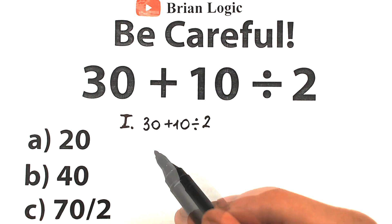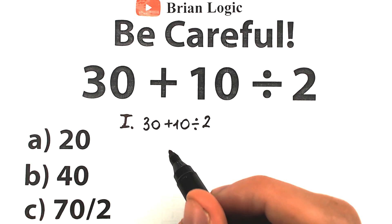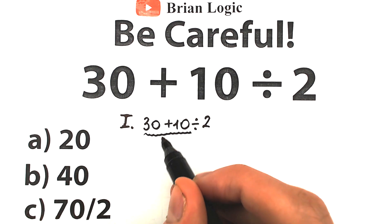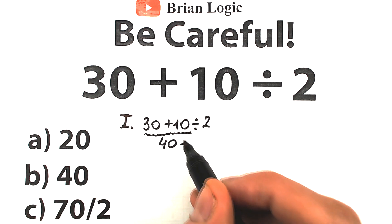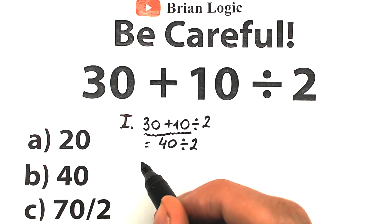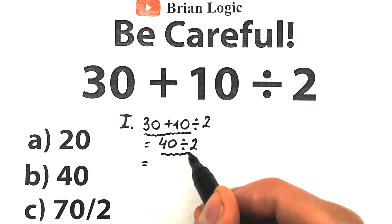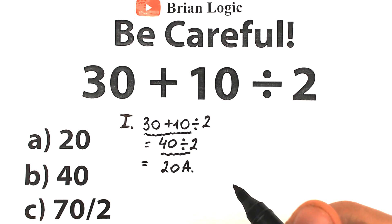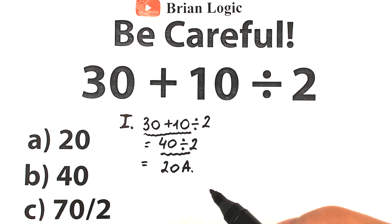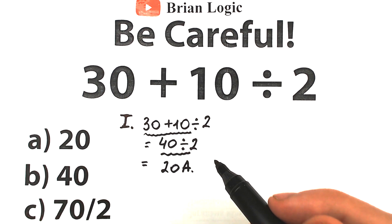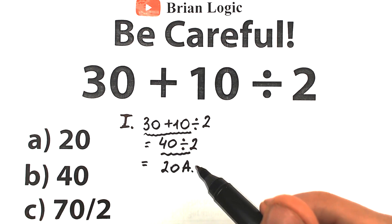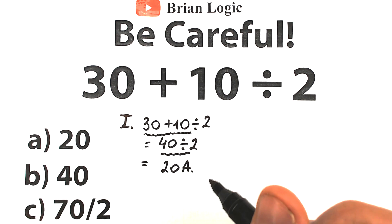They go from left to right; they don't know about order of operations and solve randomly. So 30 plus 10 on the left-hand side equals 40, and then 40 divided by 2 equals 20. This is option A, and it looks like the correct answer is 20. However, in terms of math it's not good to solve this problem randomly or chaotically — we can't solve it wherever we want.